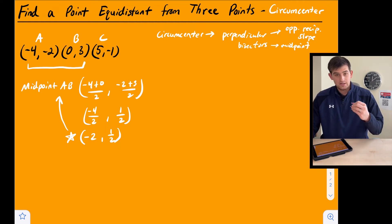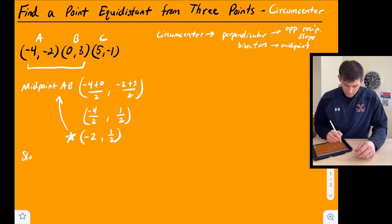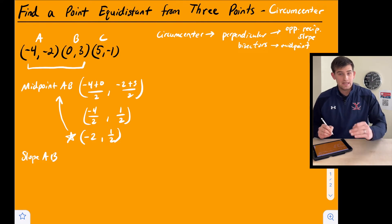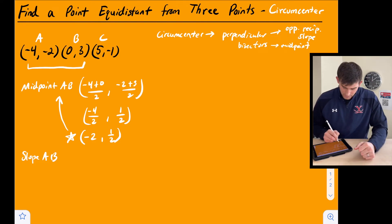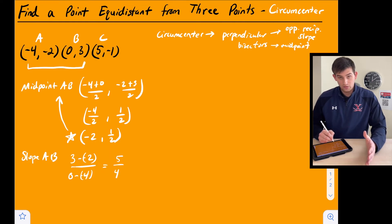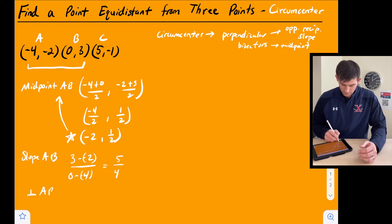Now I need to find the slope of line segment AB. We compute y2 minus y1 over x2 minus x1: that's 3 minus negative 2 over 0 minus negative 4, which is 5 over 4. The opposite reciprocal slope — the perpendicular slope — is negative 4 over 5.